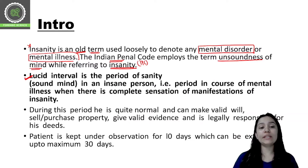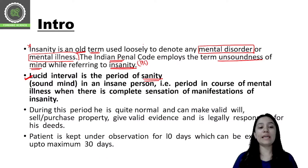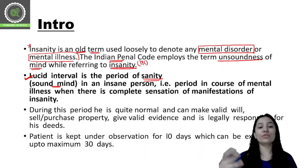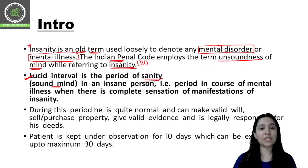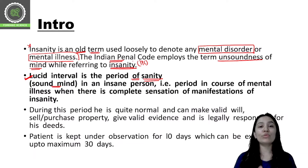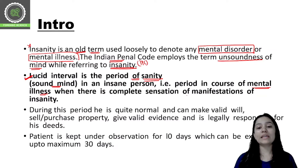A lucid interval is the period of sanity. If a person is sane, that means they are in a sound mind. Sanity equals sound mind; insanity equals unsoundness of mind. The lucid intervals are the sanity periods — the person is completely fine during those intervals. In an insane person, during the course of mental illness, there is a complete cessation of the manifestation of insanity.